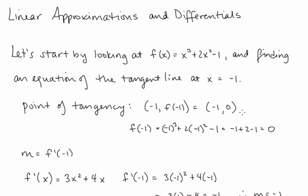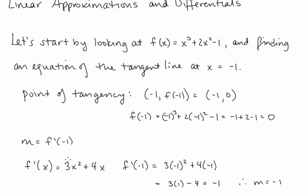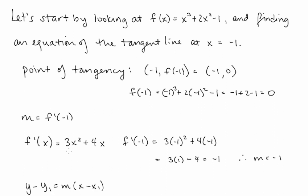The slope for this tangent line is going to be the derivative f prime evaluated at x equals negative 1. So f prime of x is 3x squared plus 4x. Plugging in x equals negative 1 gives us 3 times negative 1 squared plus 4 times negative 1, which is 3 minus 4, that's negative 1.